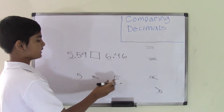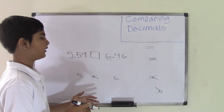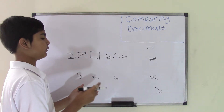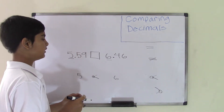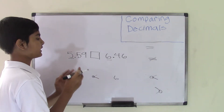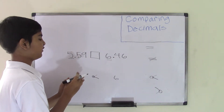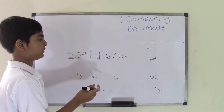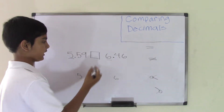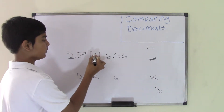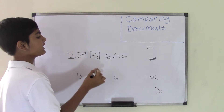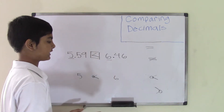Since 6 is larger, it doesn't matter what the decimal part is. Once we know that one whole number is larger than the other, the decimal part doesn't matter at all, because you already know the value. So 5.59 is less than 6.46.